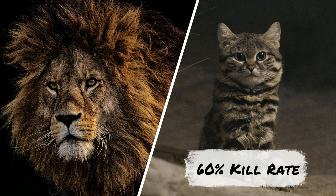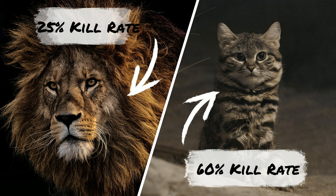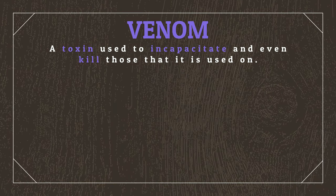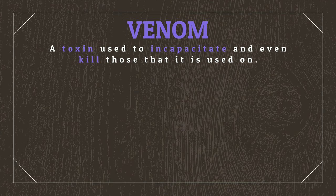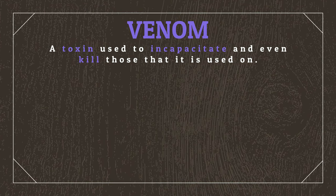Which means that technically, this creature is a more efficient killer than this creature. One way that many desert animals increase their kill rate is to use venom — a type of toxin that creatures utilize in order to incapacitate and even kill those that it's used on.